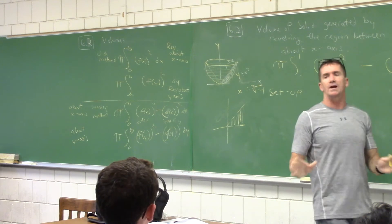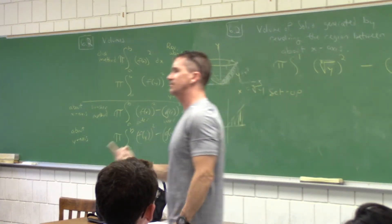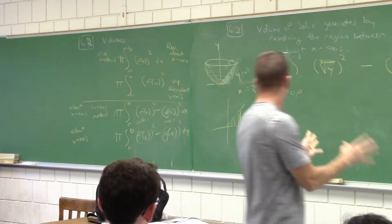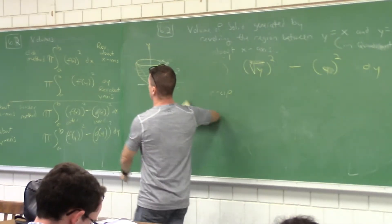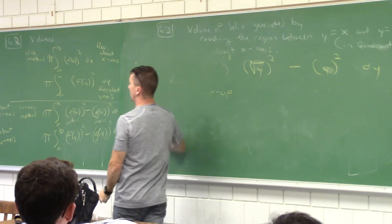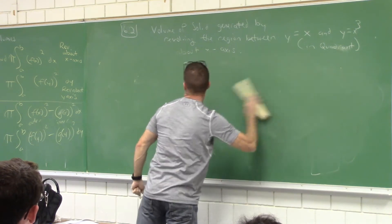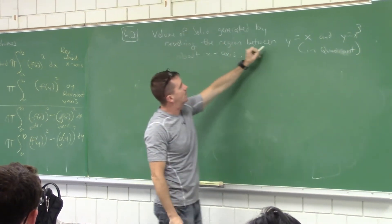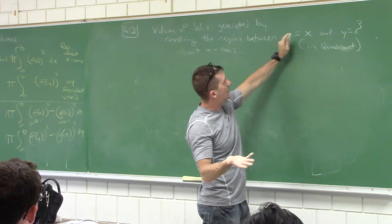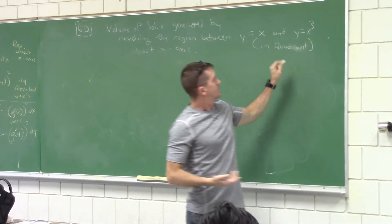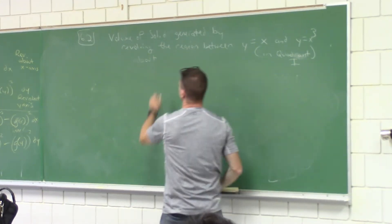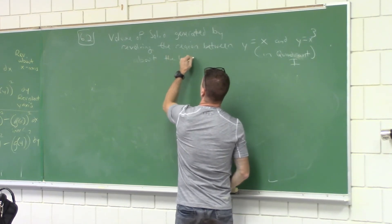So for the remainder of class, there's only one thing left for us to do: what if this gets revolved around another line? Find the volume of the solid generated by revolving the region bounded by y equals x and y equals x cubed in quadrant one, about the line y equals two.